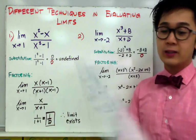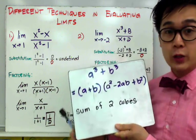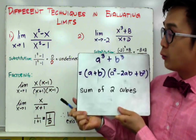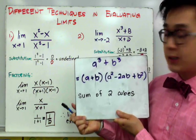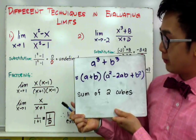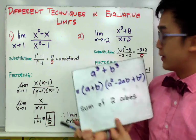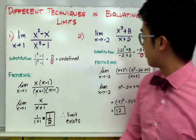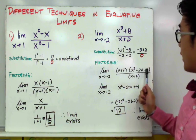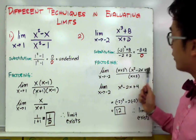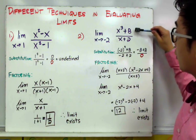Remember that a cubed plus b cubed expands into a plus b times a squared minus 2ab plus b squared. Applying this to the numerator, x cubed plus 8 expands into x plus 2 times x squared minus 2x plus 4.